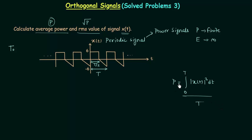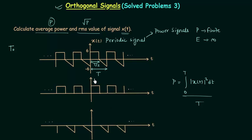This is how we can obtain average power P, but as this lecture is based on orthogonal signals, I will include orthogonal signals in the calculation. I will break this waveform into two different waveforms — signal x1(t) and signal x2(t) — such that x1(t) plus x2(t) equals the original x(t).